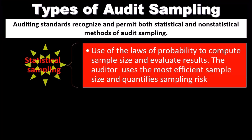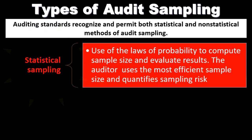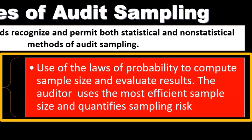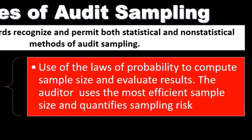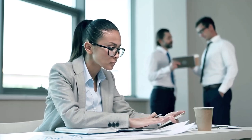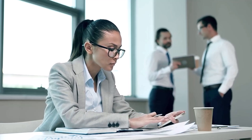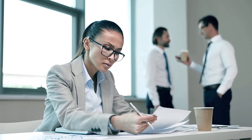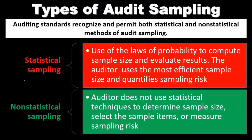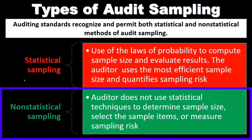We'll start with the statistical method, which uses the laws of probability to compute sample size and evaluate results. The auditor uses the most efficient sample size and quantifies sampling risk. Statistical sampling uses a more formal type of sample selection — statistical mathematical analysis — giving us a more formal approach and more exact calculations than a non-statistical method.